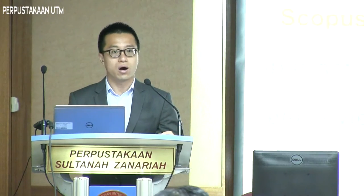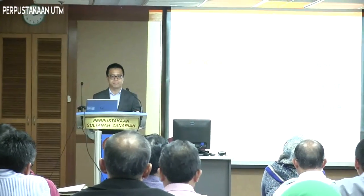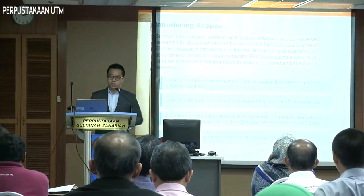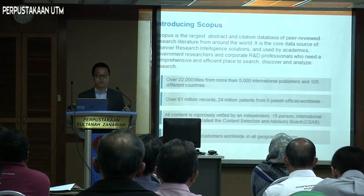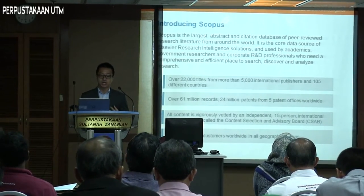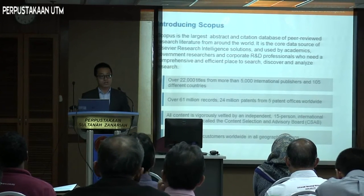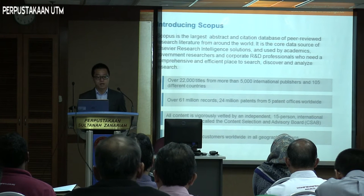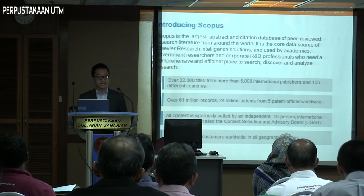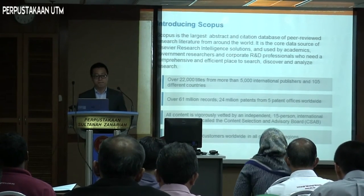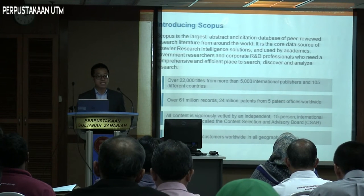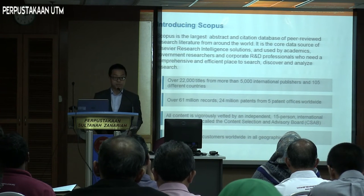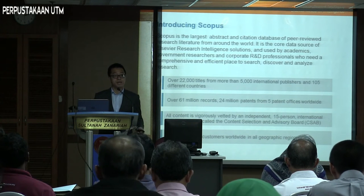Scopus is the world's largest abstract and citation database for peer-reviewed scientific literature. It is the core data source of the Elsevier Research Intelligence Solutions, used by academics, government researchers, and corporate R&D professionals who need a comprehensive and efficient place to search, discover, and analyze research. With up to 22,000 titles from more than 5,000 international publishers across 105 different countries, we have approximately 61 to 62 million records and 24 million patents from 5 patent offices worldwide. All content is vigorously vetted by an independent 15-person international board of experts called the Content Selection and Advisory Board, also known as the CSAB.